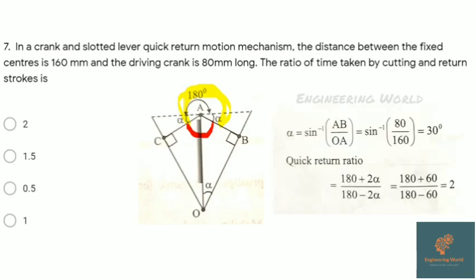We can consider the angle traveled during cutting stroke divided by the angle during return stroke. By applying simple mathematics, we get alpha as 30 degrees. Quick return ratio by the formula we get as 2. Here's a simple trick: if distance between fixed centers is a and driving crank is a/2, then quick return ratio is 2.